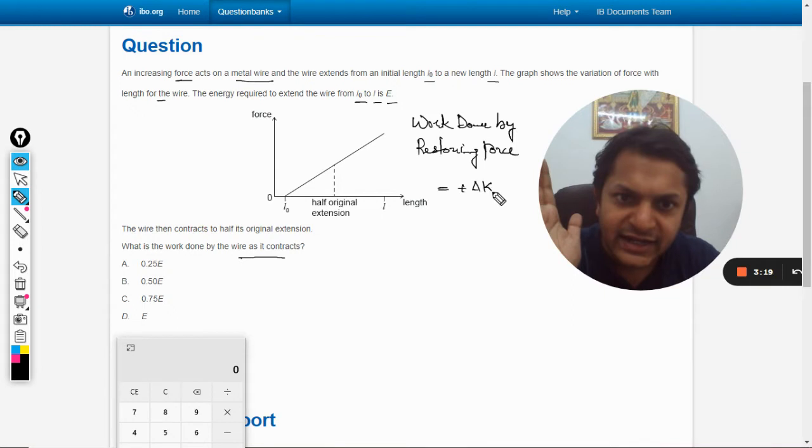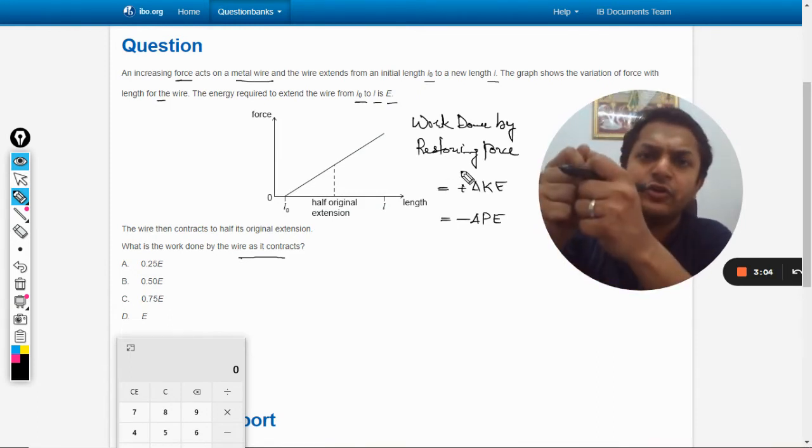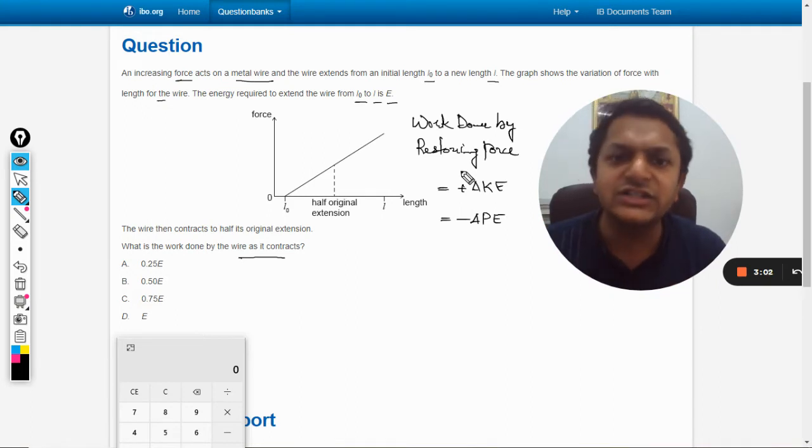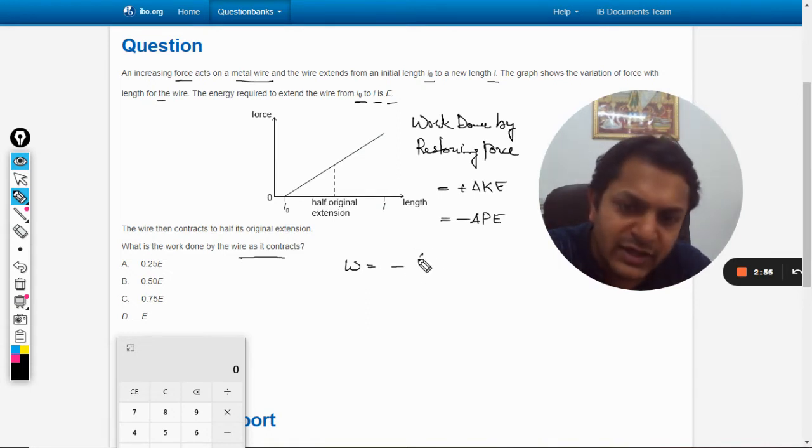There is no question of kinetic energy because we are talking about a wire that is getting extended and contracted. So work done by restoring force will be negative of the potential energy final minus potential energy initial, which means initial minus final.